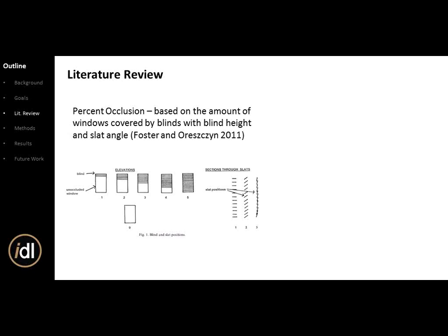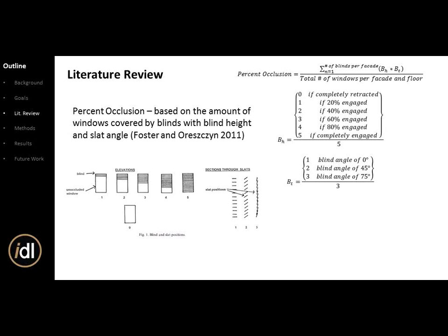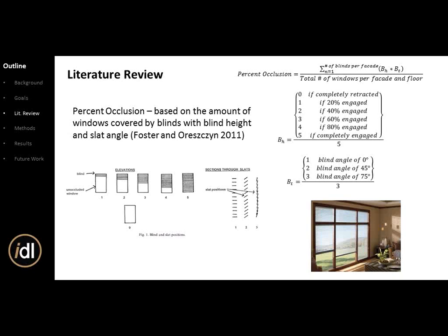Blind Switch 2012-B is based on exterior illumination on the facade depending upon the floor height — that's the main trigger. One concept I'll bring up a lot is percent occlusion — the amount of windows covered by blinds depending on blind height and tilt angle. Basically, it takes each individual window per facade per floor, finds the percent occlusion, sums them, divides by the total number of windows on that facade and floor to get a general percent occlusion.